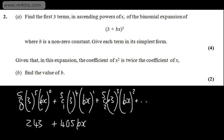5c2 gives me 10. We've got 3 to the power 3, which is 27. So that's going to be 10 times 27, which is going to give me plus 270. Then we're going to have b squared x squared.